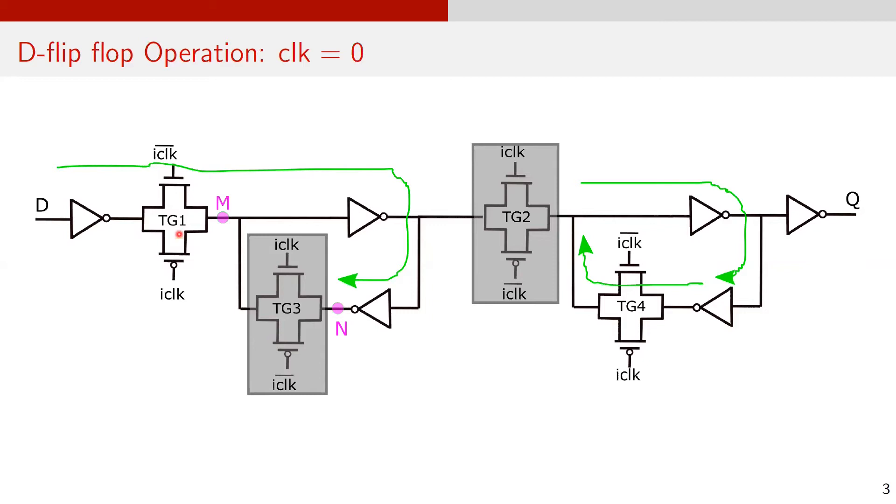Since TG1 is on, the new data at input D is available in the master latch up to point N, denoted here. On the other hand, TG2 is off, which isolates the new data in the master latch from the slave latch.